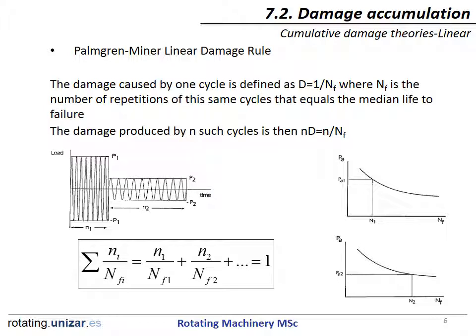The damaging effect of N1 cycles at stress amplitude 1 is assumed to be N1 divided by NF1, while the damaging effect of N2 cycles at stress amplitude 2 is assumed to be N2 divided by NF2, and so on. Failure is predicted when the sum of all the ratios becomes 1. This expression is the linear damage rule proposed by Palmgren-Miner.